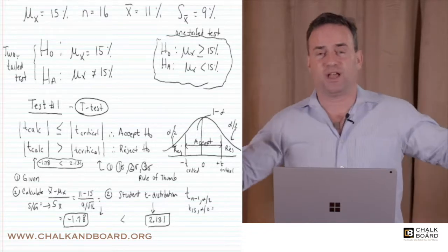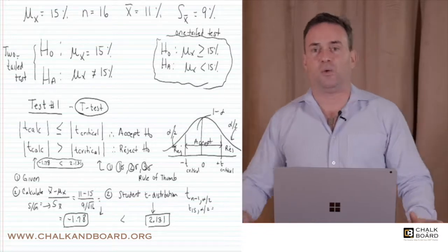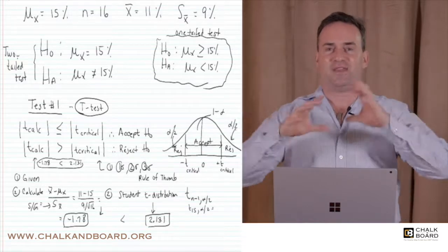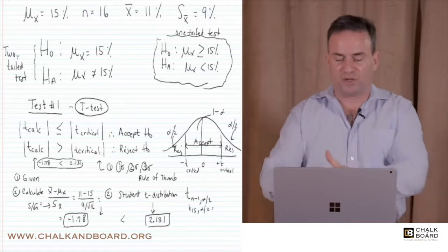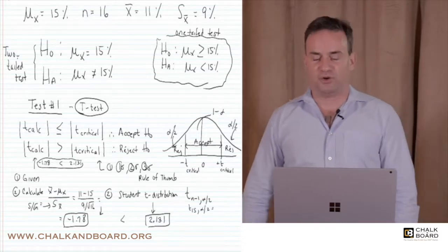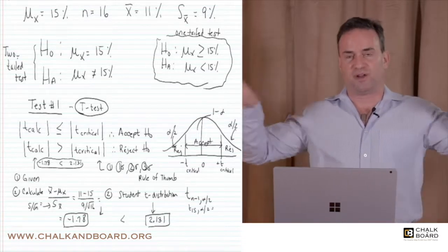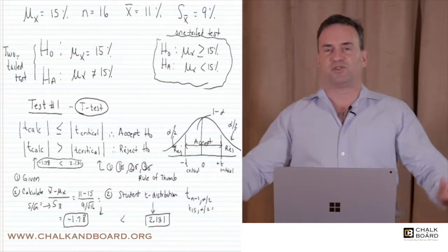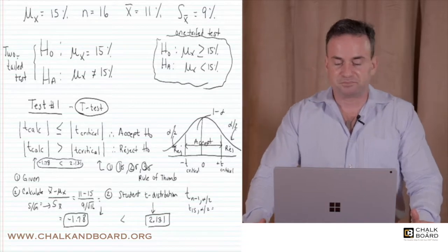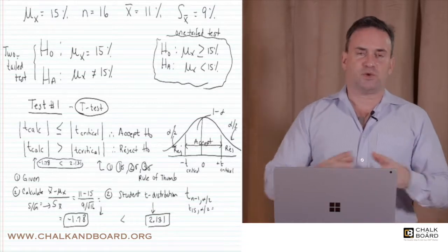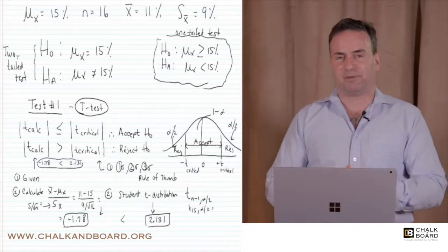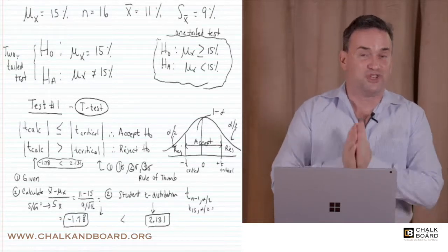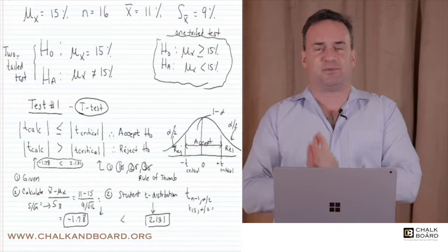We call the tails the rejection range and the area within them the acceptance range. You can see at the bottom of the screen the rejection range is on two sides — right and left — and the acceptance range is between them. You want to reject the null hypothesis and accept the alternate hypothesis, because then you find a result that is statistically significantly different from what you expected.